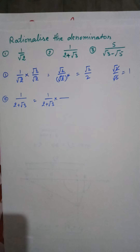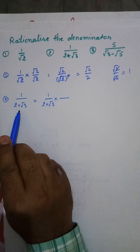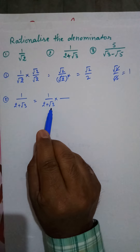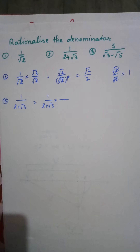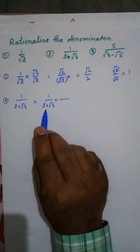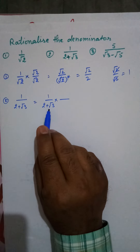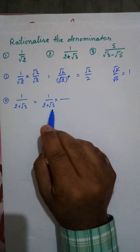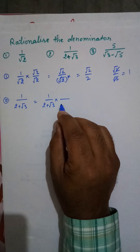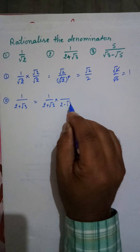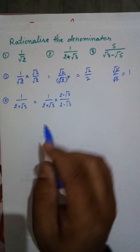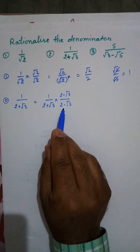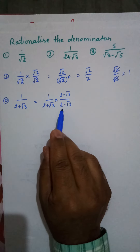The second question is again to rationalize the denominator. Here the denominator has two terms: 2 plus √3. It is not easy to multiply by a single number, so we check by which number we can multiply 2 plus √3 so that the square root cancels. For this purpose, we multiply by the same numbers 2 and √3 but with the sign changed — the sign is plus, so we write minus.